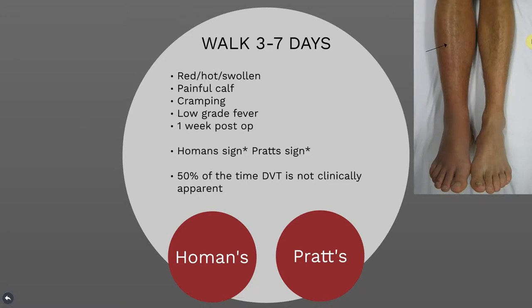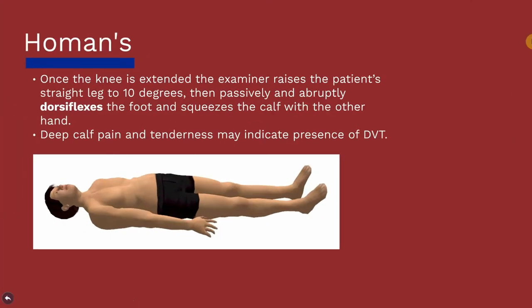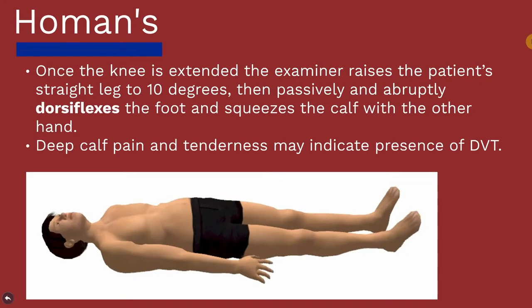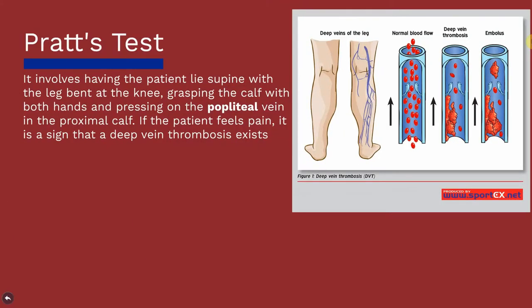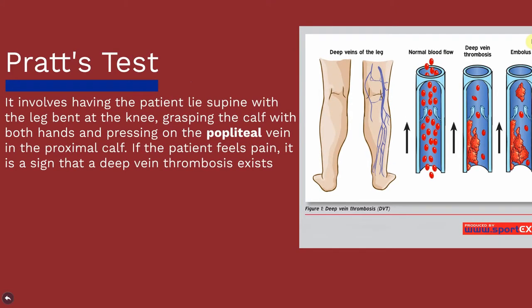Next is Walk — or lack of walking. This occurs at about post-operative day seven. Symptoms include a red, hot, swollen, painful calf with cramping; it can present with a low-grade fever but that's not always the case. Patients with suspected DVT should be screened with a lower extremity Doppler ultrasound and started on therapeutic anticoagulation when clinically safe. The Homans test is done with the patient supine, knee extended, leg raised to about 10 degrees; the ankle is passively and abruptly dorsiflexed and the calf squeezed — a painful calf could indicate DVT. The Pratt's test involves the patient supine with the knee flexed; the examiner grasps the calf with both hands pressing on the popliteal veins in the proximal calf — pain could indicate a DVT.